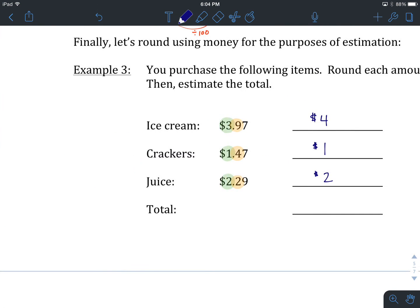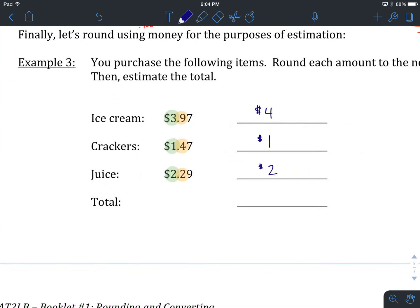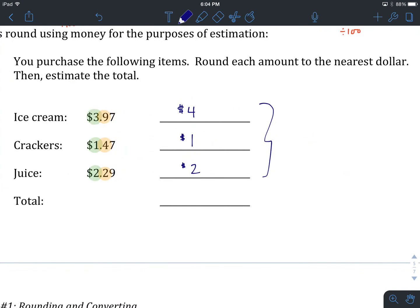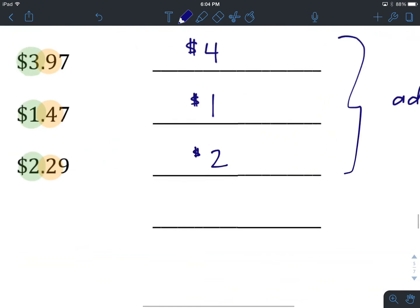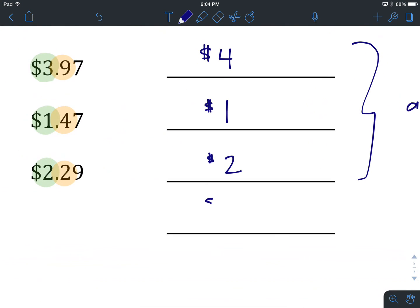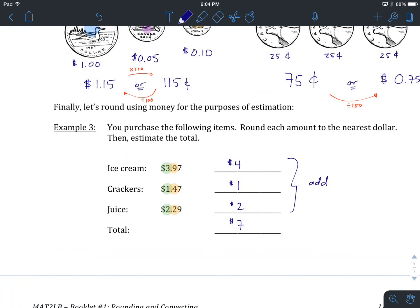How do we estimate our total? We simply add these three together. We have $4, $1 is $5, and another two will be a $7 estimate of your bill so far with ice cream, crackers, and juice. This is just a quick way to do some approximating.